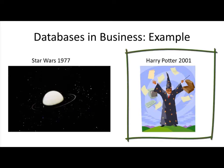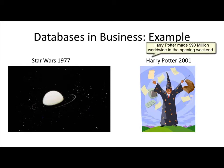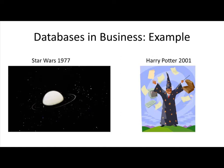Contrast this to the release of Harry Potter and the Sorcerer's Stone back in 2001. On the Monday morning after the release weekend, the news agency said this movie made 90 million dollars in the opening weekend — but the weekend had ended just a few hours ago. So how did this total come so fast? All of those sales rolled up into a database, and with one single query, a grand total was instantly available.